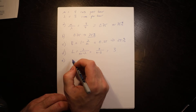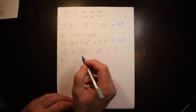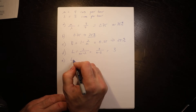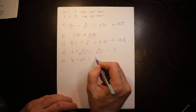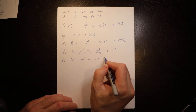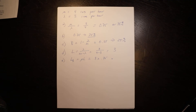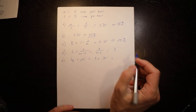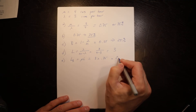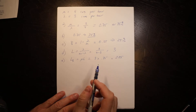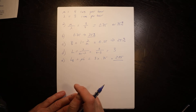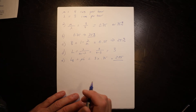Part (e): the expected number of cars in the queue. Lq equals rho times L, which is 0.75 times three, equals 2.25. We don't round that because it's an expected value, not an actual count.